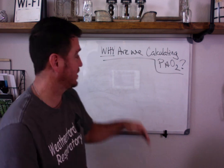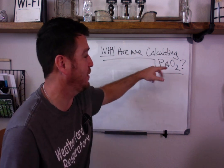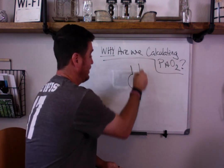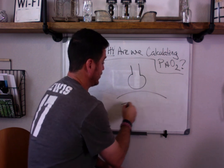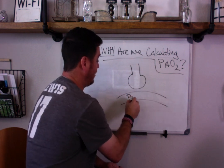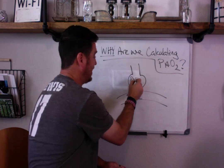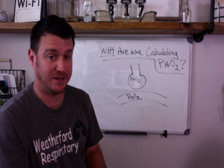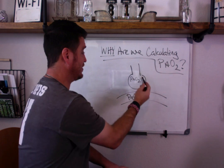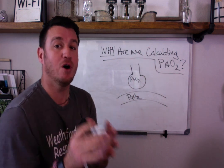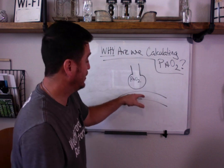I'm just going to answer that simple question. Why are we calculating PAO2 and it simply comes down to this. This is your alveoli. This is your arterial blood. So this is PaO2 little a O2. This is PAO2. Now you have to understand that whatever O2 is in the alveoli most of it should diffuse across.